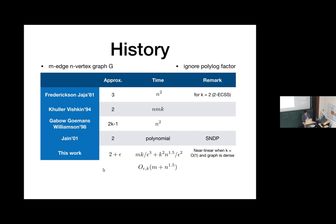There is also a more general algorithm that solves SNDP — the entire class of survival network design — with a 2-approximation. The running time is polynomial, with an unspecified polynomial factor. In this work, we attempt to speed up the 2-approximation algorithm. We give a 2-plus approximation with running time mk over epsilon squared plus k-squared n to the phi, which is nearly linear when the graph is dense.